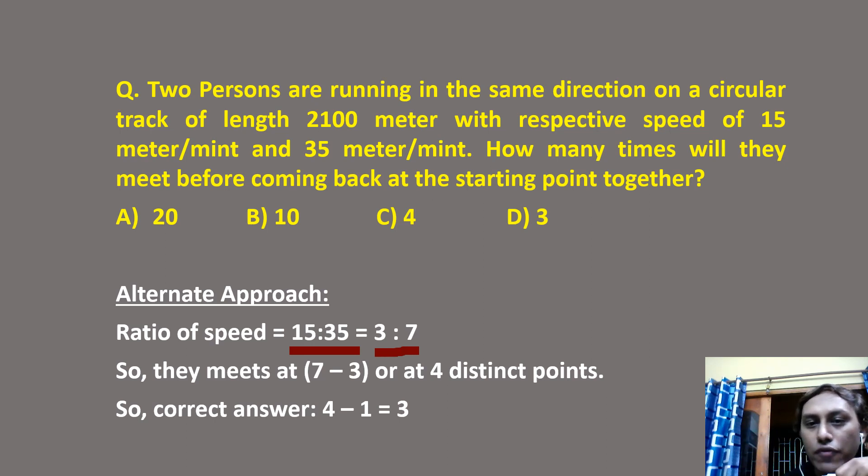And they are moving in the same direction. So remember, when they are moving in the same direction, they must meet at 7 minus 3, the difference of their ratio, that is 4 distinct points. This is a beautiful concept. If they are moving in the same direction, then at how many distinct points they meet, the difference of their ratio, 7 minus 3, that is 4.